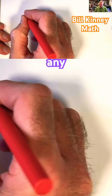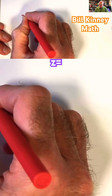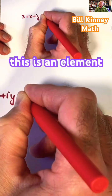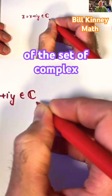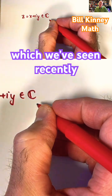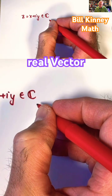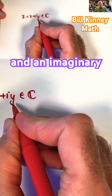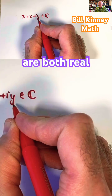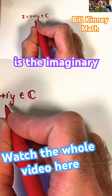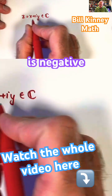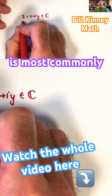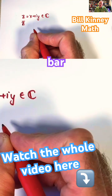Given any complex number z equals x plus iy, this is an element of the set of complex numbers, which we've seen recently is a real vector space. I've got a real part equal to x and an imaginary part equal to y — those are both real numbers. i is the imaginary unit, where i squared is negative 1. Its complex conjugate is most commonly written z-bar.